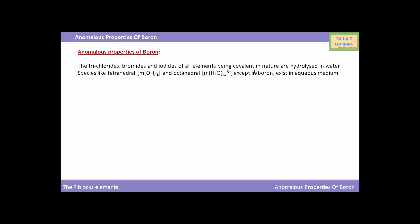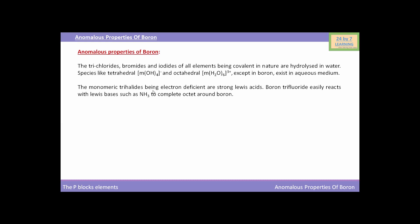Species like tetrahedral M(OH)4⁻ (that is, hydroxide of metal) and octahedral M(H2O)6³⁺ (that is, hydrated metal) exist in aqueous medium for most elements, except in the case of boron. The monomeric trihalides of boron are an exception.